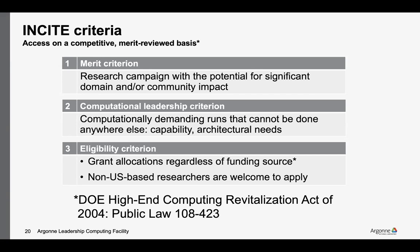For eligibility, there are no requirements in terms of your funding source or where you're living at the time of applying. There are a few restrictions — we can't have PII or classified information on the system — but almost everyone should be eligible. There is a twofold review process for INCITE, and it's important to understand as you're thinking about your potential to apply and what problems might be appropriate.